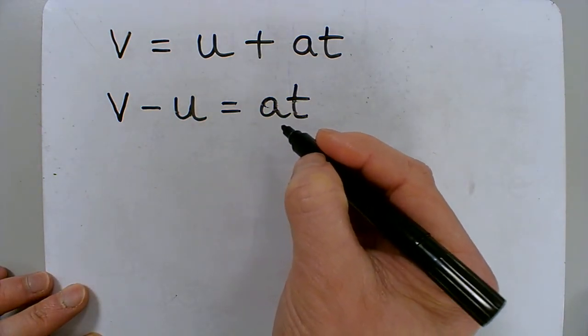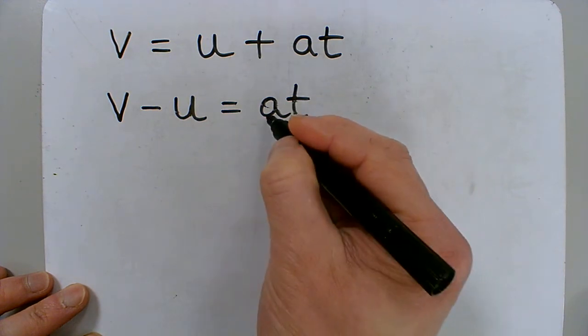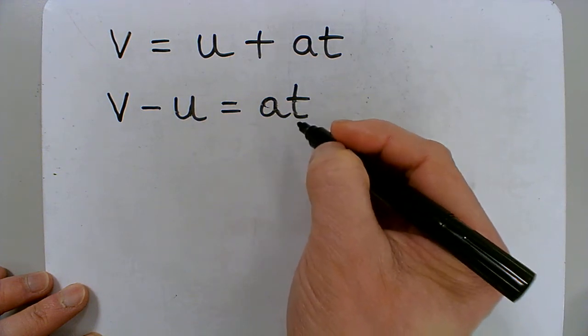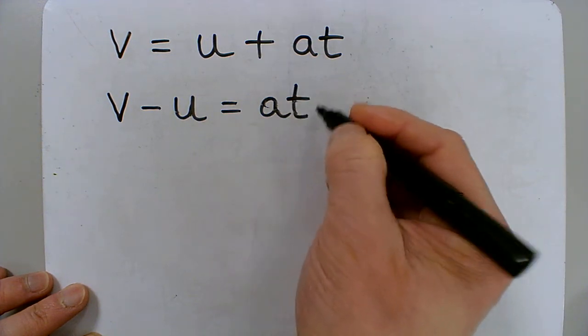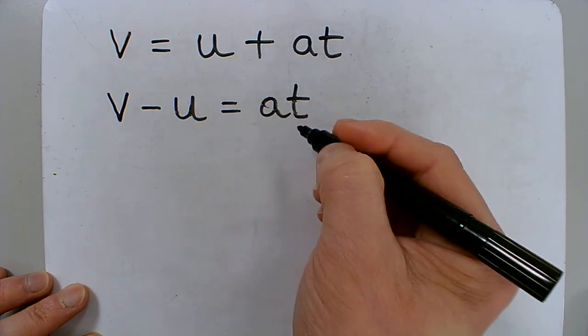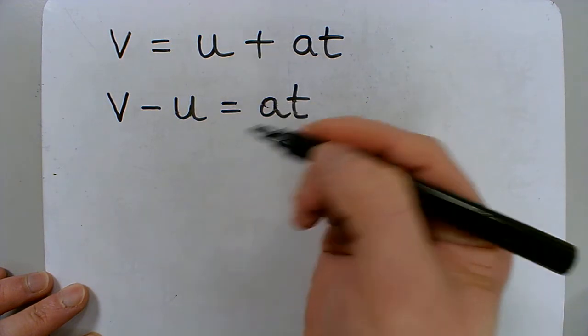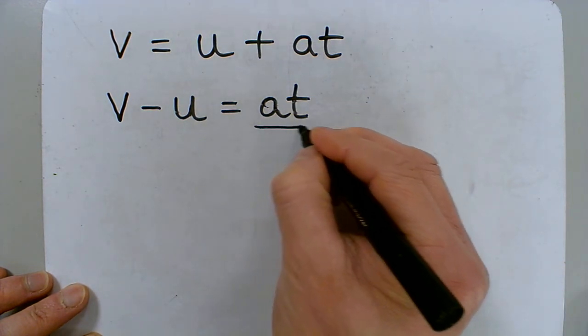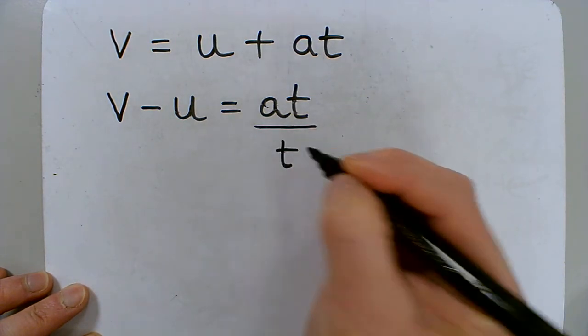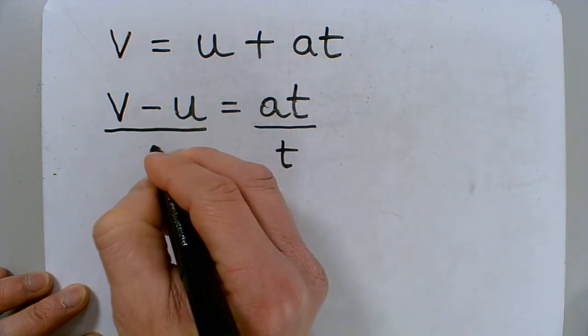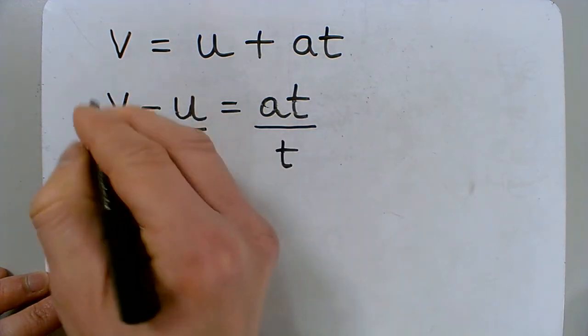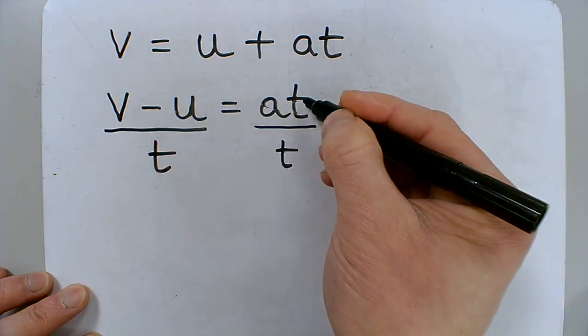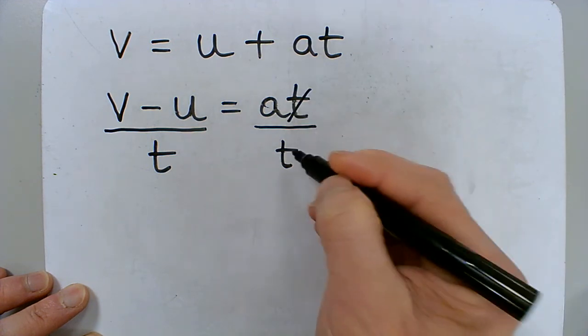The next thing I need to do is get rid of the t. And at the moment, this is a times t. So we always have to do the opposite in order to get rid of what we want. So the opposite of multiplying is dividing. And whatever I do on one side, I do on the other side. So here, I have to divide by t. And whatever I do on one side, I do on the other. And I have to divide everything by t. And here, we've got t on the top, t on the bottom. They cancel out.